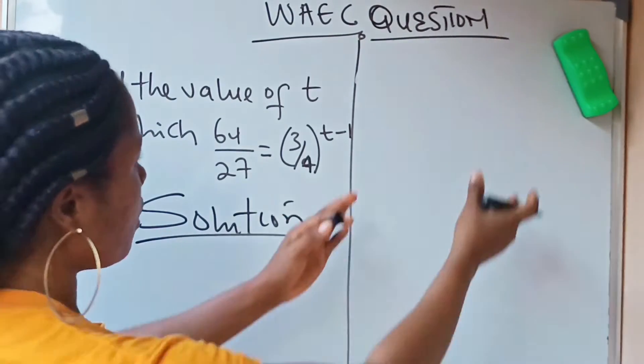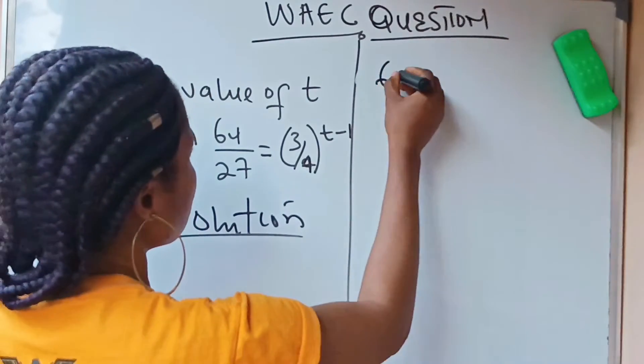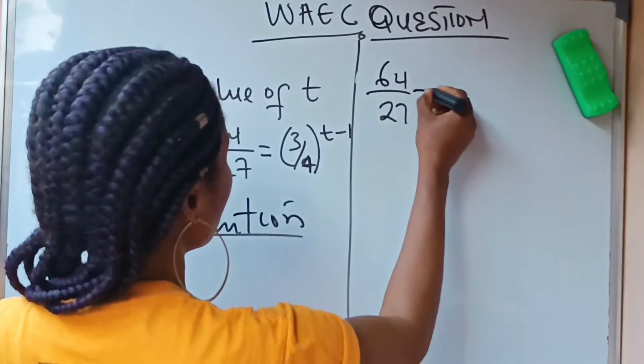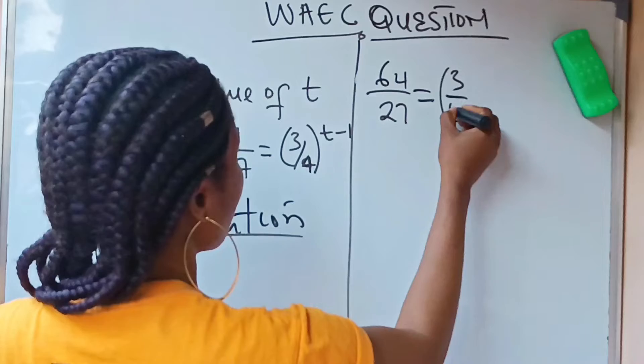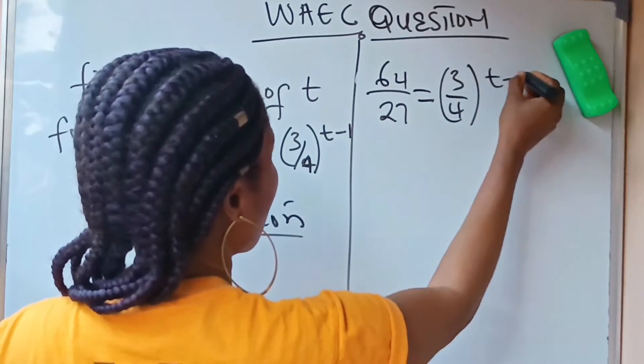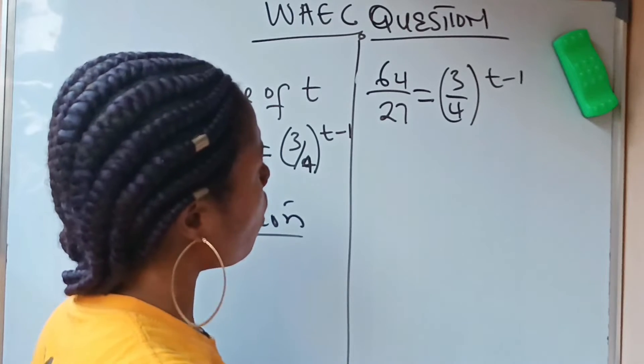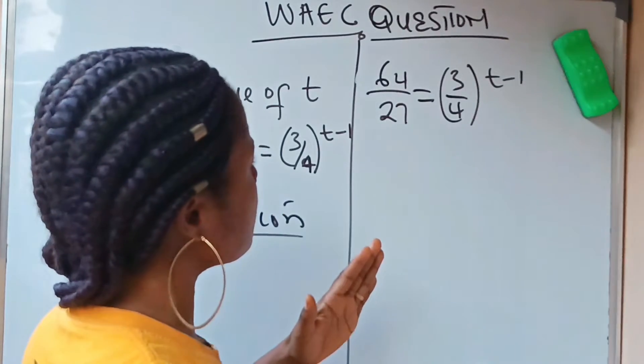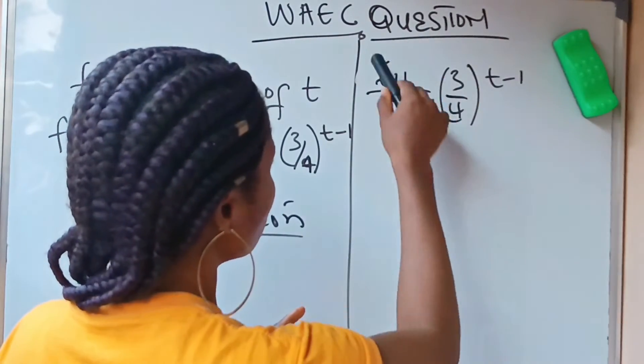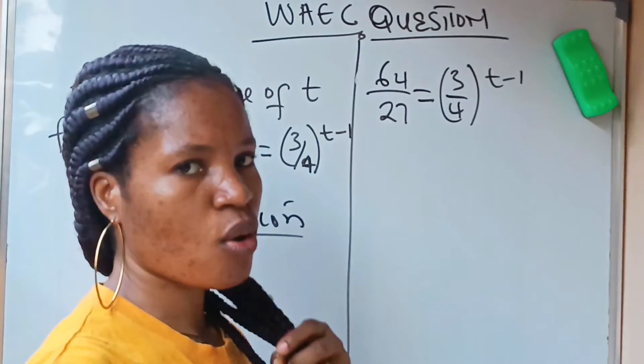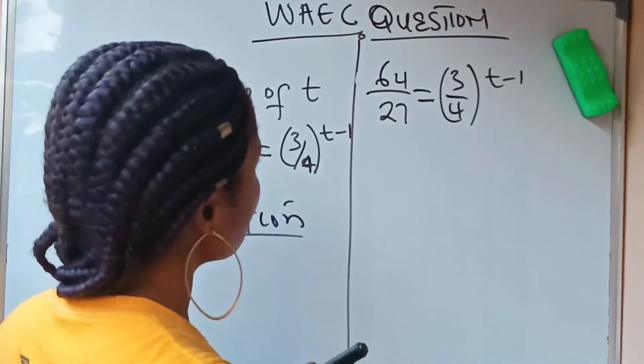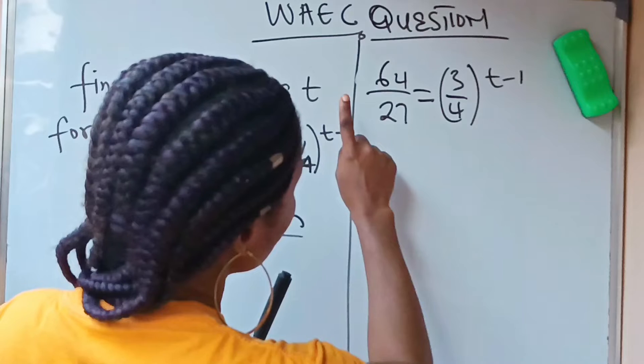Solution. We have 64 over 27 is equal to 3 over 4 raised to the power of t minus 1. Now first of all, I want to do something. I want this side to look like this, so an idea came to my mind.